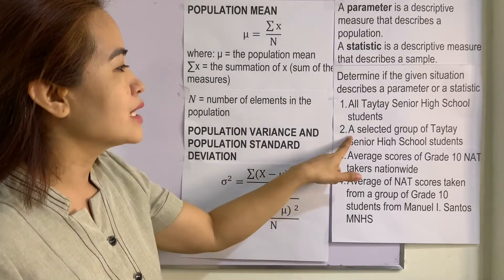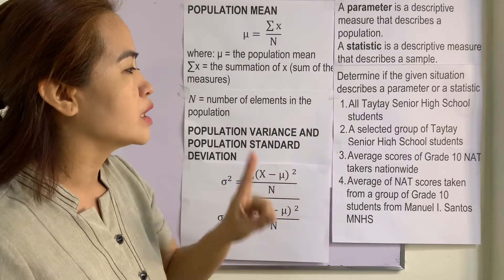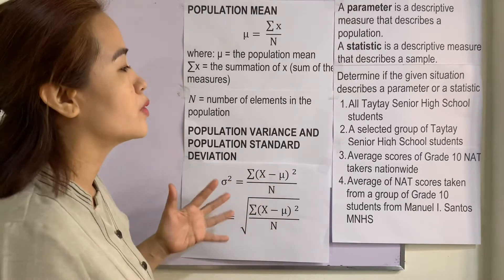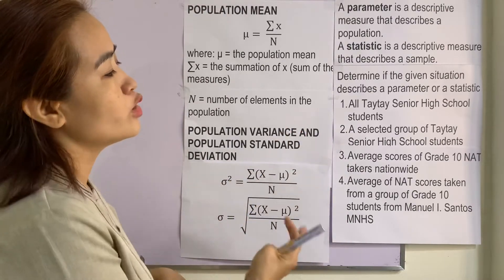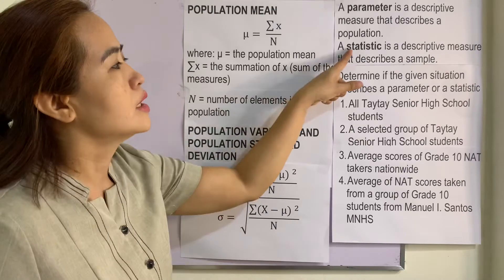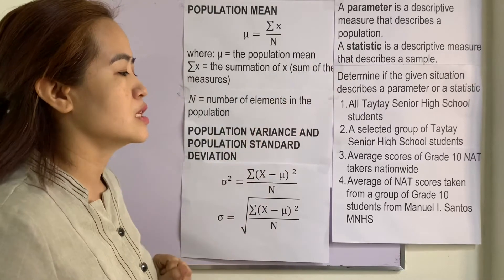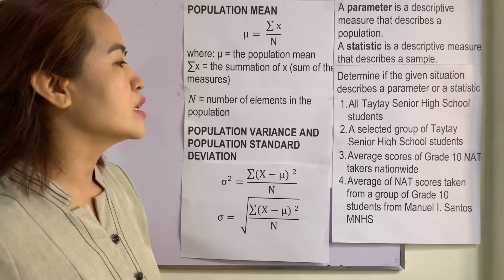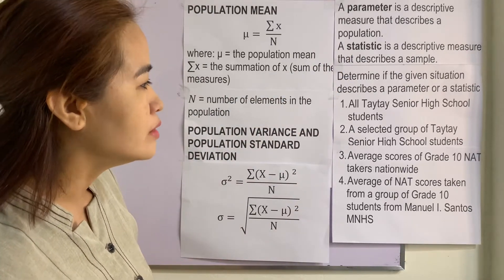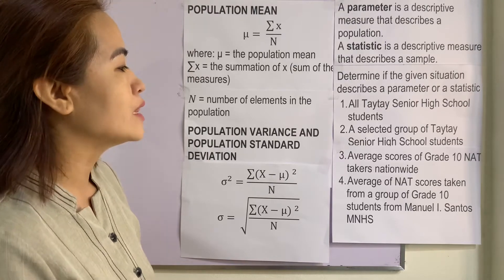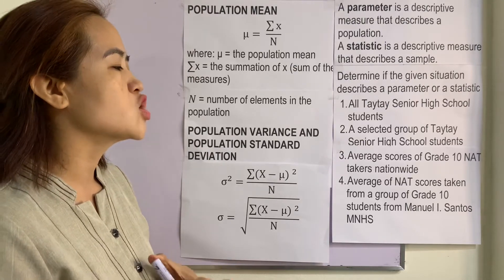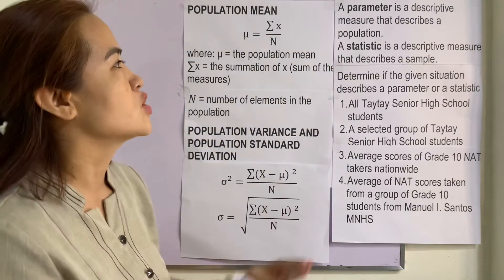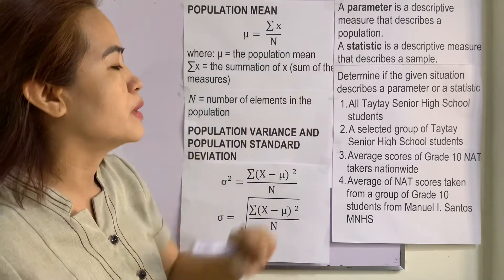A selected group of Tai Tai senior high school students — we are talking about part only of the population, so that is a statistic. Third: average scores of grade 10 NAT takers nationwide. We are talking about the entire population here, so that is a parameter.